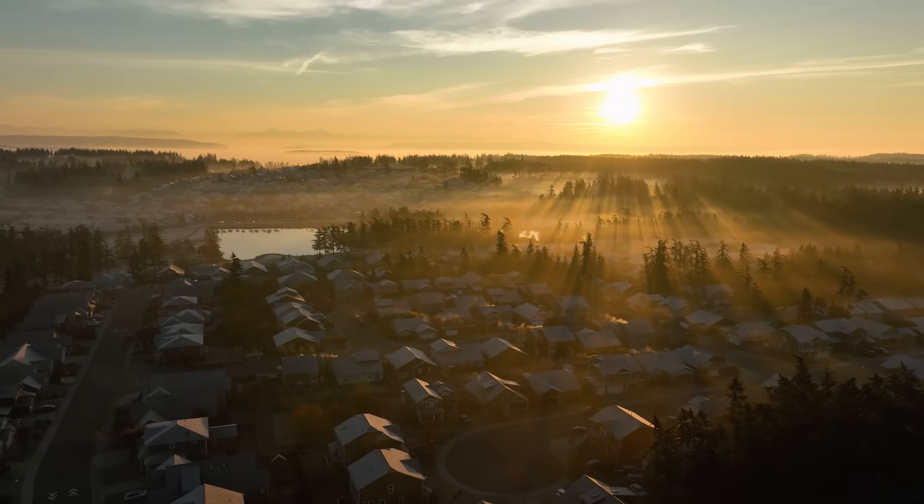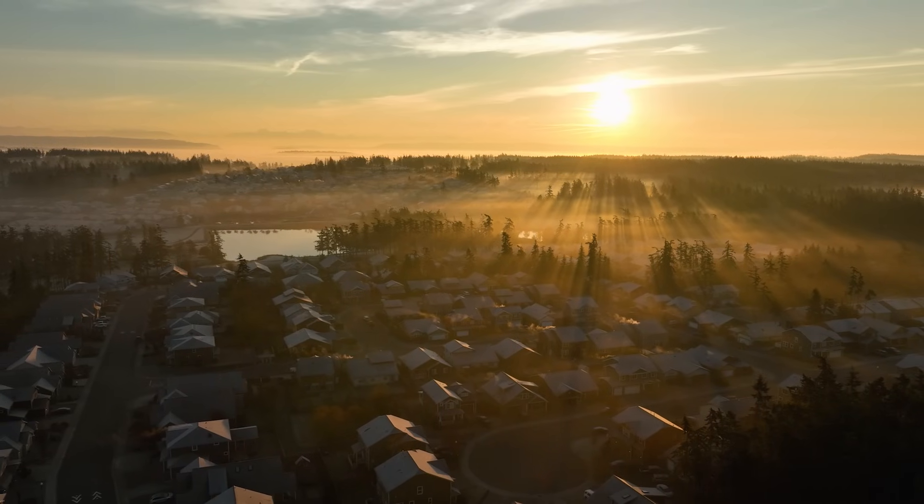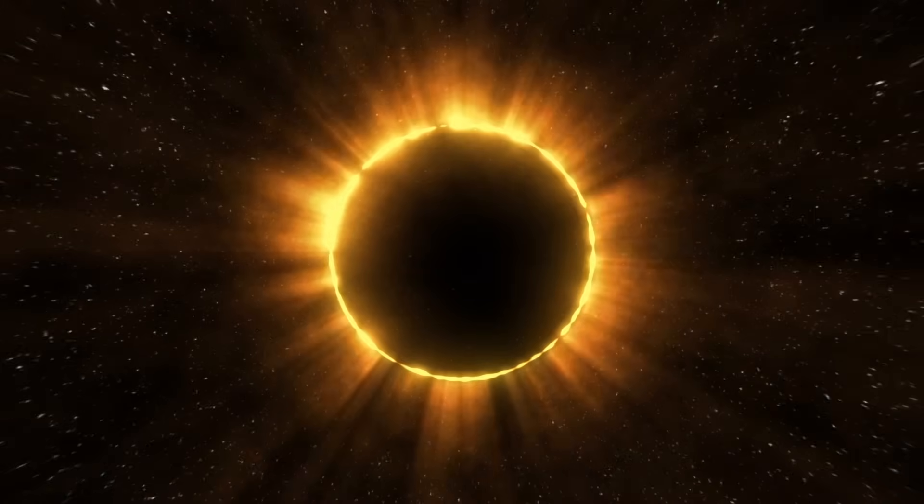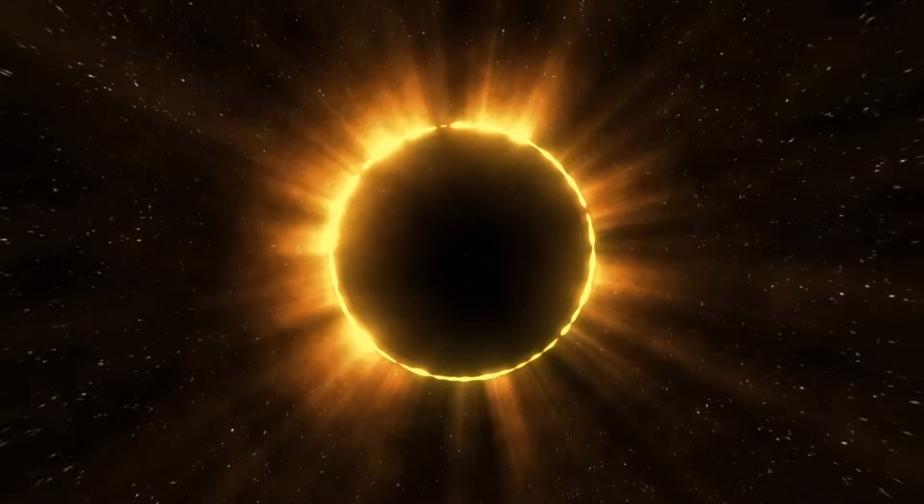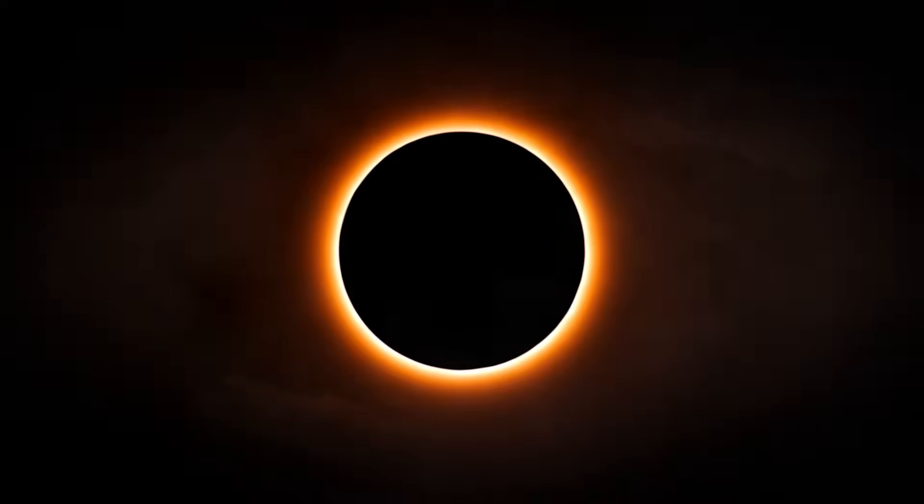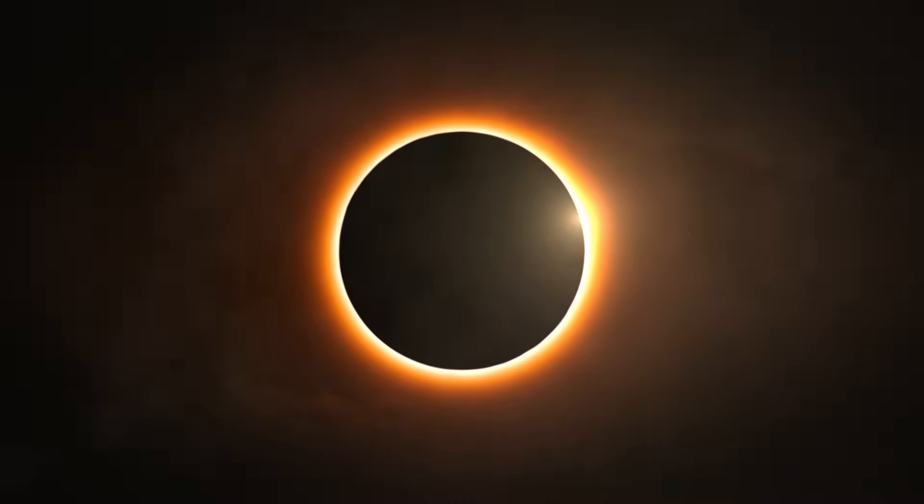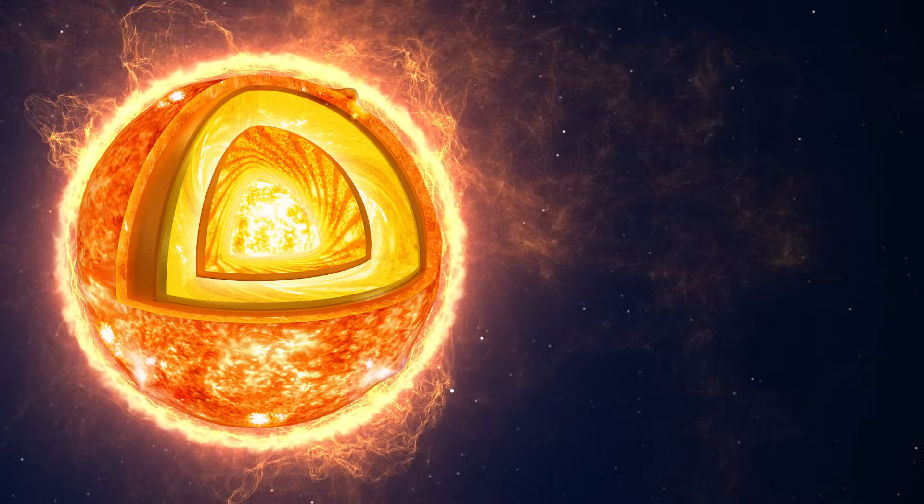When we observe the sun from our planet, what we see is the photosphere layer. However, during a solar eclipse, when the sun is blocked, we witness a reddish glow, which is a chromosphere layer. In a total solar eclipse, only the corona layer is visible, appearing as a faint yellow layer.